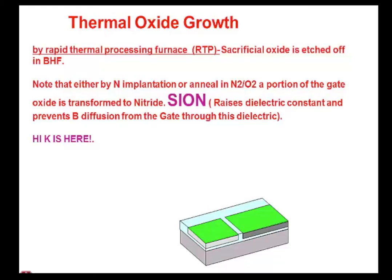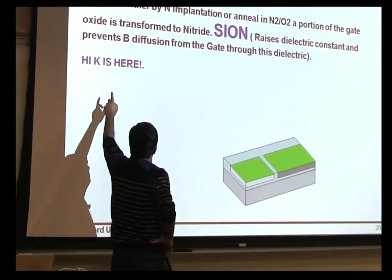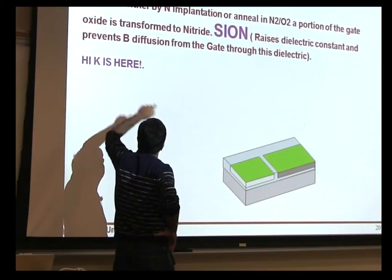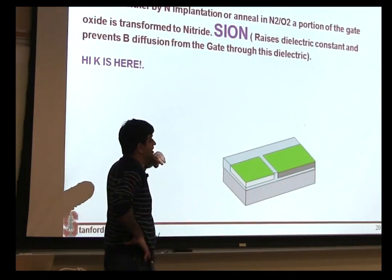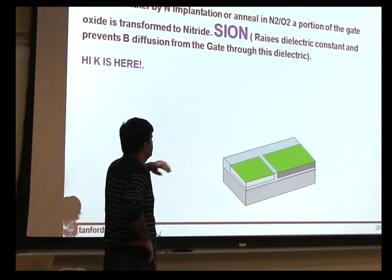Many times people nitride it because that helps, first of all, in improving your dielectric constant. And it also improves the barrier property of this oxide, so it helps prevent boron from diffusing into your dielectric. Later, in week five, we'll actually discuss the high-K metal gate flow and how that comes in at this place as well.